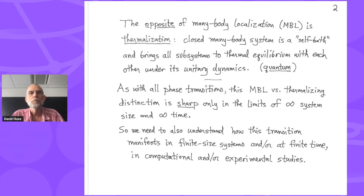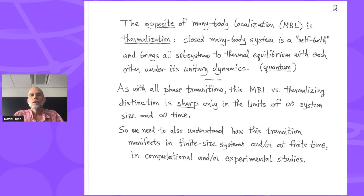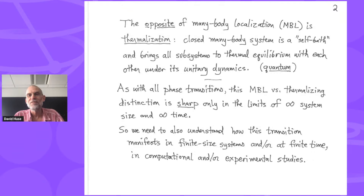If done properly with limits taken appropriately, this is a phase transition — a sharp distinction. Like all phase transitions, to make it well-defined and sharp you have to take the limit of an infinite system and infinite time. In real numerics or experiments studying such systems, we don't have either of those two infinities. So we also want to understand how this physics manifests in finite systems and finite time, in either computational or experimental studies of these phenomena.